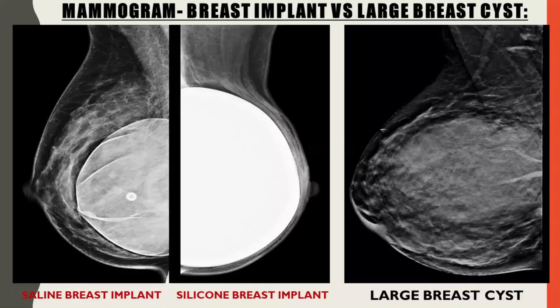Let's talk about how to tell the difference between a breast implant and a large breast cyst. As you can see from these images, a breast implant is a very obvious structure on the mammogram image. Let's look at the middle image. This is a silicone implant, so it's radio opaque — a water density which is bright white on the mammogram — and it's a much higher density than the large breast cyst seen in the opposite image. Breast implants are well-defined, obvious structures with clearly defined edges. Most commonly they're placed bilaterally, although in cases of breast reconstruction you may only see an implant on one side.